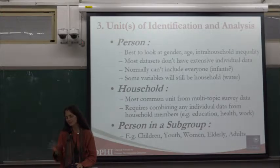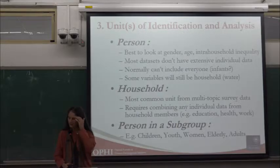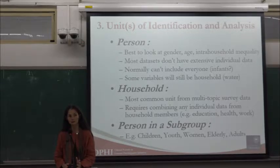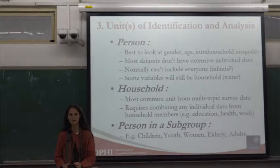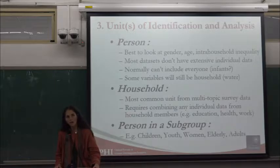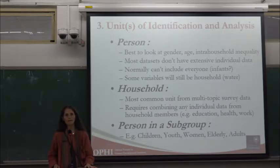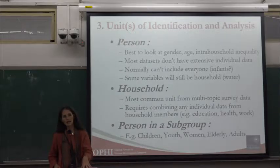Bhutan's gross national happiness index takes the person as the unit of identification. Work I did with Maurizio Aboblaza using EU SILC data in 31 European countries also takes the person as the unit of identification — in none of those 31 countries were women less poor than men, and parity seemed achieved only in Portugal, the poorest country by some measures. However, using the person has disadvantages: it is difficult to include everyone, for example babies, whose education, work, and health needs are different. Mexico's measure covers adults and doesn't capture child poverty in their national MPI at all. Alternatively, you could do an individual measure for children with different indicators for ages 0–2, 3–5, 6–14, and 15–17.